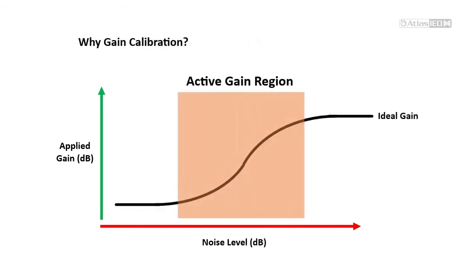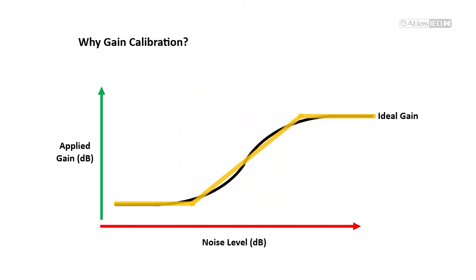At some noise levels, ANC should increase gain proportionally to the noise, but at some point the customers start to raise their voices to compete with the rising levels, and ANC should stop increasing the gains. On the other extreme, we don't want ANC to drastically reduce the gains when only a few quiet customers remain in the zone.